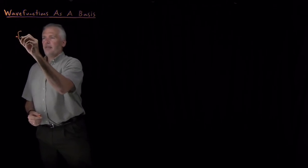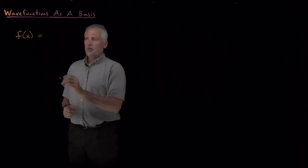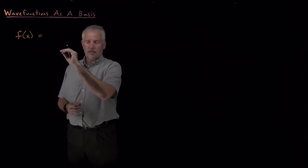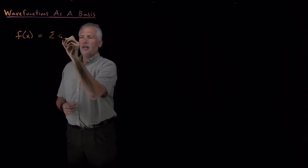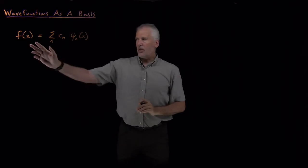You might be familiar with Fourier series — the idea that if I have a periodic function, I can use sine waves and cosine waves to construct any periodic function I want. That's an analogy for what we're about to talk about, which is the fact that if I have some wave functions, like the particle in a box wave functions, I can write any function that obeys the same boundary conditions as the 1D particle in a box wave function. I can build that function up out of a linear combination of the wave functions.